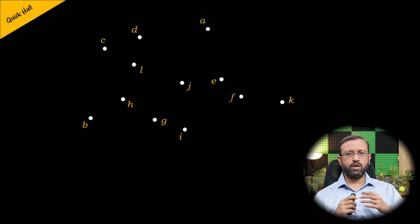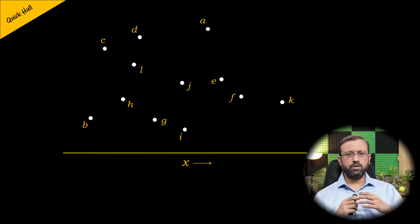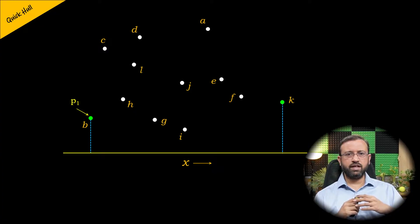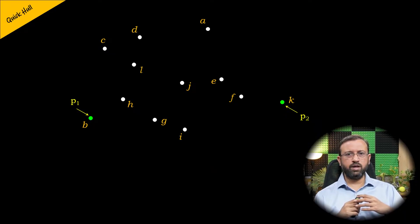Let us consider these 12 points in a plane. The quick hull algorithm identifies two extreme points according to the x-coordinate. The point B has the smallest x-coordinate, so it is one of the extreme points. Let us call point B as P1, and the other point K has the largest x-coordinate — let us call this point K as P2. These two extreme points P1 and P2 are part of the convex hull.